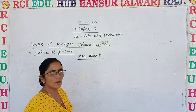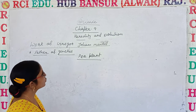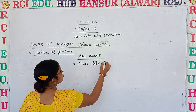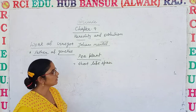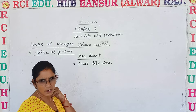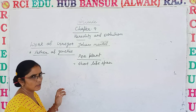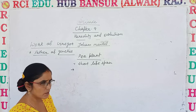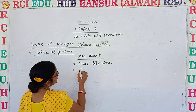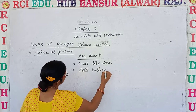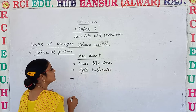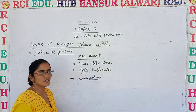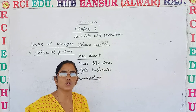He worked on the pea plant. Why did he choose it? There was a reason behind it. The pea plant has a short life span — it completes its cycle in just 3 to 4 months, so you get results as soon as possible. The second reason is the pea plant is a self-pollinator, and in some cases it also undergoes cross pollination. The pea plant also has very contrasting characters.